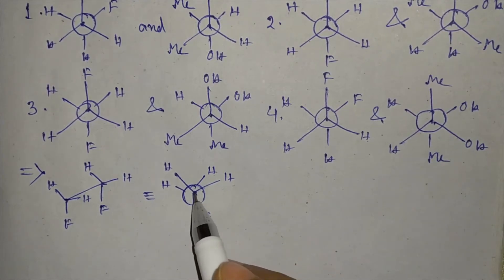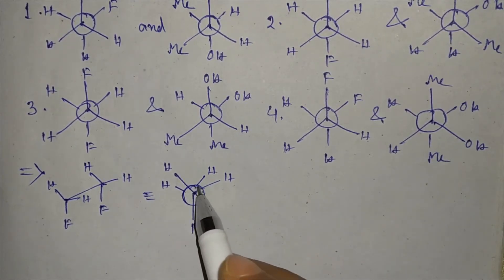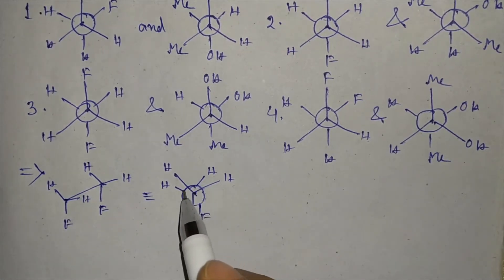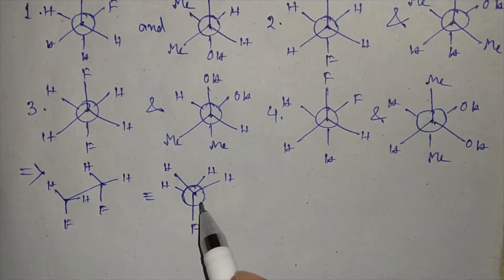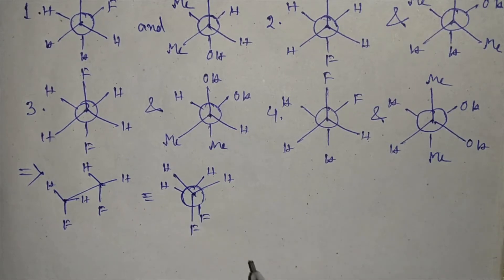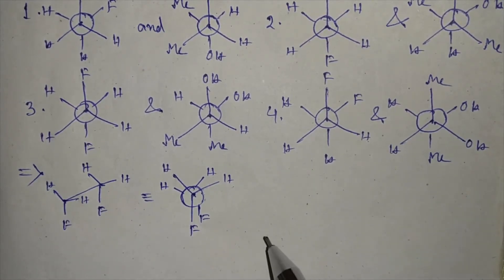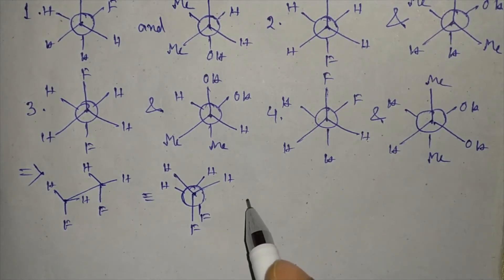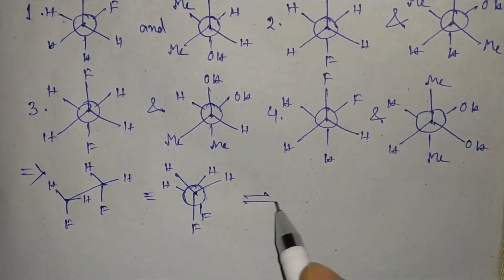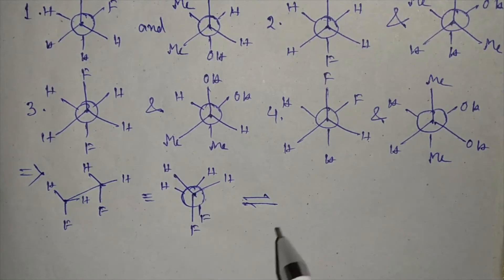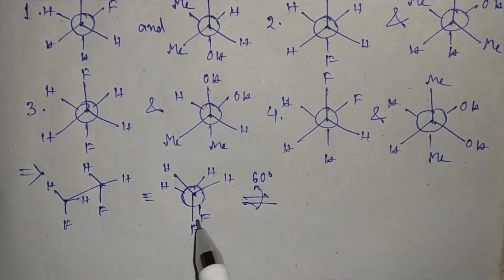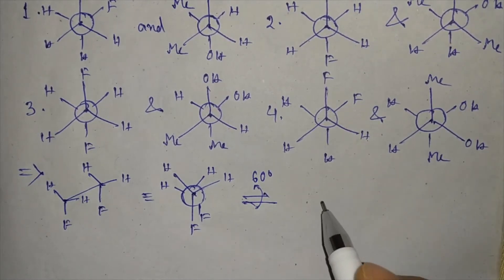The circle represents the back carbon and the dot represents the front carbon. We will rotate the back carbon each time at a 60 degree angle in the anti-clockwise direction and we will get the different conformations.